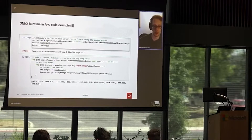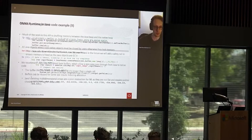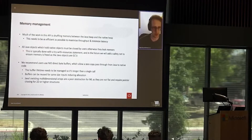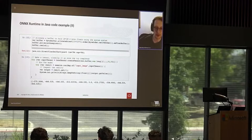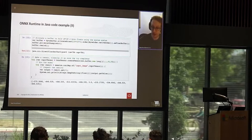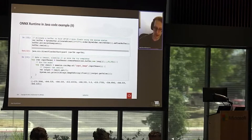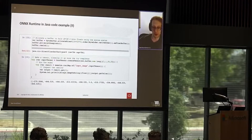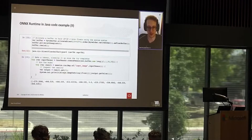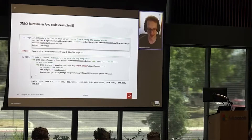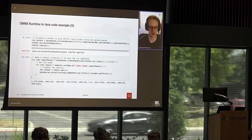We wrap the data in an ONNX tensor, which doesn't actually do any copy — it just wraps some extra metadata around it and gets the pointer out. Then we run the model by feeding in the tensor along with the name of the input. We get a result object back that we can query to get all the outputs. We can see that we have 10 values representing the likelihood of each digit. This is from the MNIST test set, and CNNs do pretty well at that.